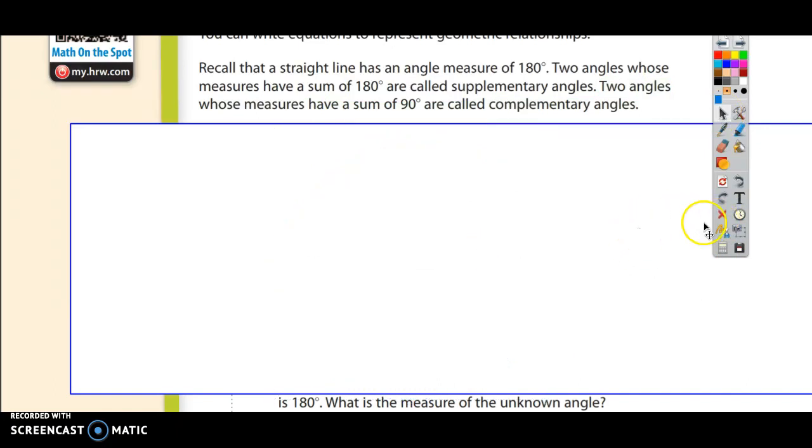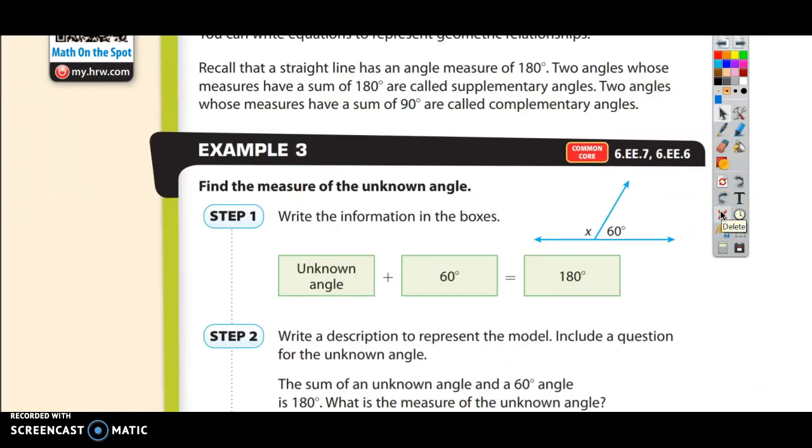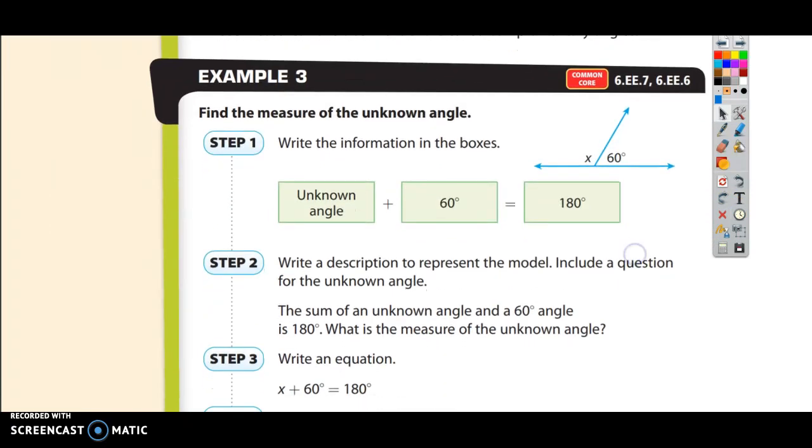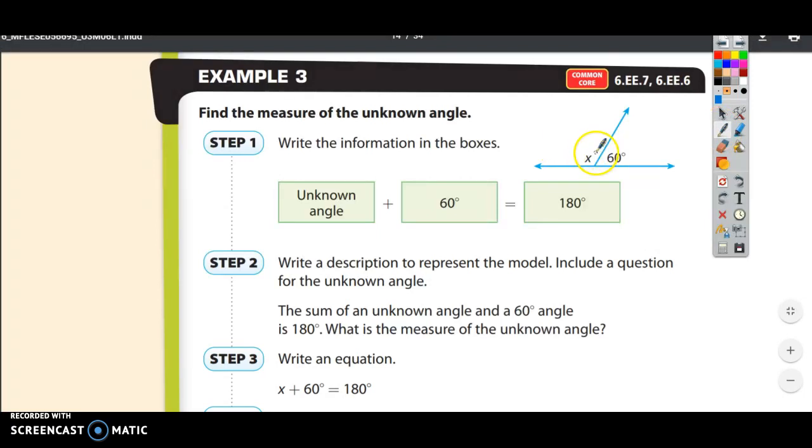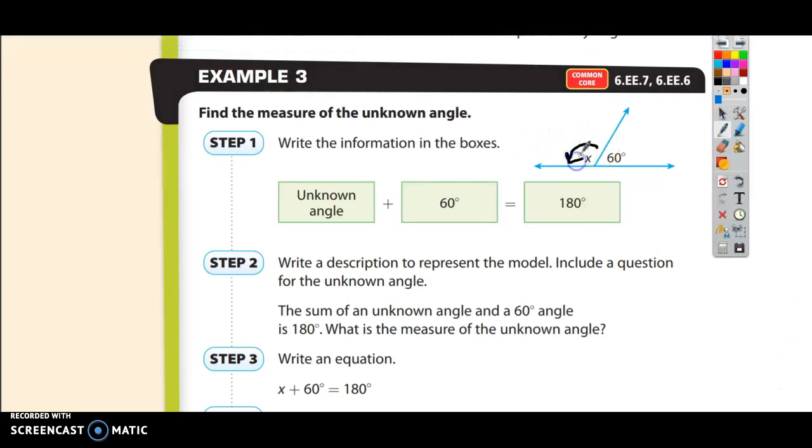We're going to go through the rest of this page now. You should have a basic understanding of what complementary and supplementary mean. We already did this one on example 3. It says find the measure of the unknown angle. It says write the information in the boxes. Well, the unknown angle x right here, we don't know what that angle is.